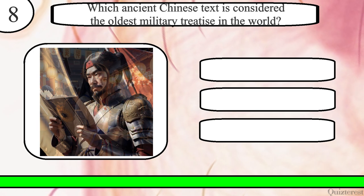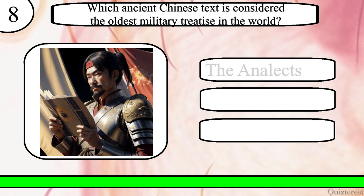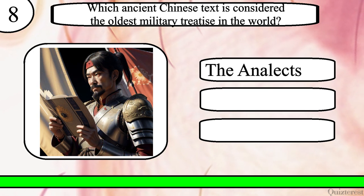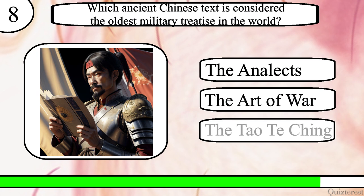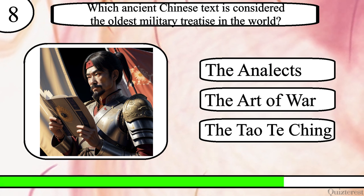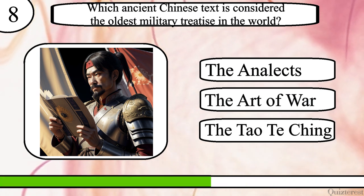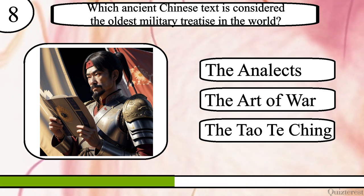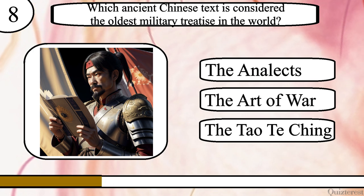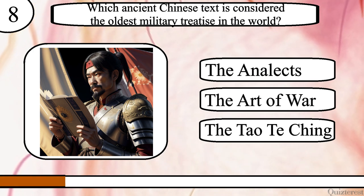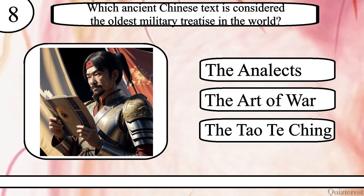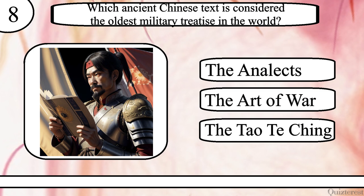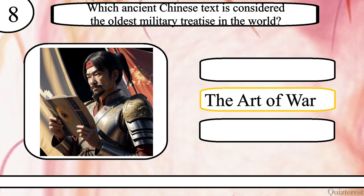Question 8. Which ancient Chinese text is considered the oldest military treatise in the world? The Analects, The Art of War, or the Tao Te Ching? The correct answer is The Art of War.